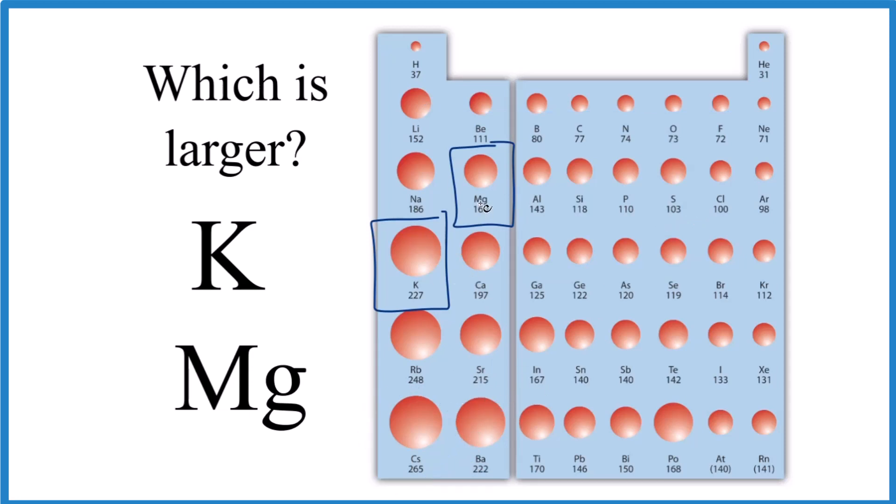For potassium and magnesium, we're going down a group. Potassium's lower, so we would expect it to be larger than magnesium. For magnesium, we're further along in the period, so they decrease across the period. Magnesium should be smaller.